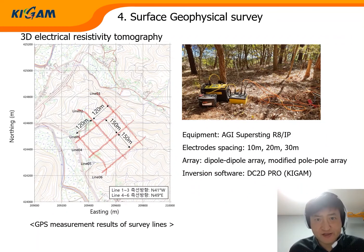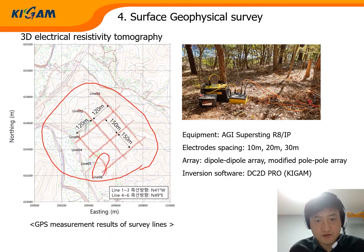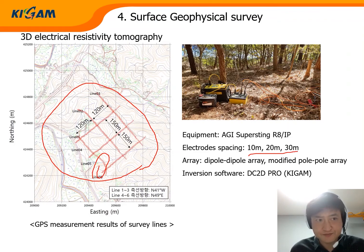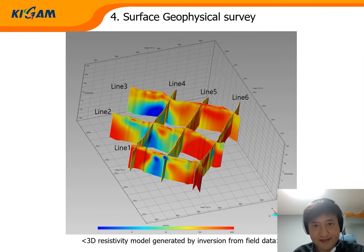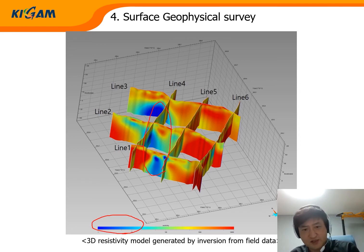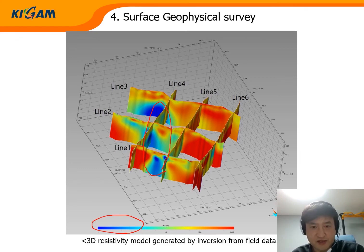We designed six survey lines for 2D electrical resistivity tomography. An abandoned mine exists in this area. We used electrode spacing of 10 meters, 20 meters, and 30 meters, with dipole-dipole and modified pole-pole arrays. We obtained a 2D resistivity model where blue color means low resistivity value, which is the target in this exploration. From the rock physics data, we know that graphite has very low resistivity, so this low resistivity zone is our target.